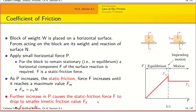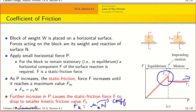As you increase the force beyond FM, the object goes past static equilibrium and starts moving. It turns out that the force you need to apply to continue making it move is actually smaller than the maximum force you applied. This kinetic friction force is given by FK = μk · N, where μk is the coefficient of kinetic friction.